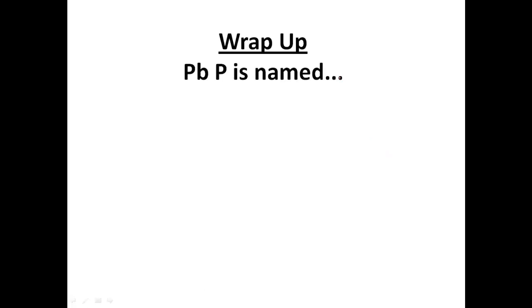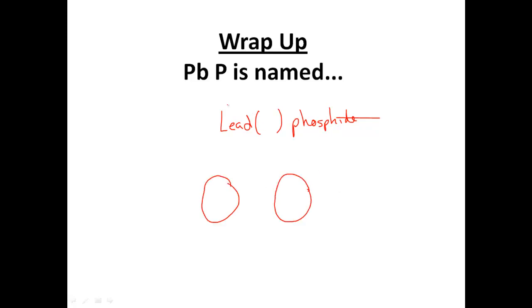Now we have PbP — more like what you'd see on a test. This is called lead something phosphide, with the charge on lead in parentheses. Lead is located under the staircase on the periodic table, so it has more than one charge. Phosphorus has a 3− charge, so the total negative charge is 3−. I need 3+ to balance that, distributed over one lead atom — so lead is 3+. Therefore this is lead(III) phosphide.